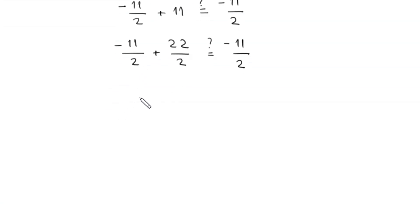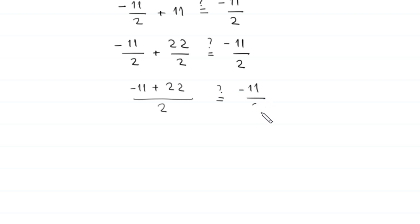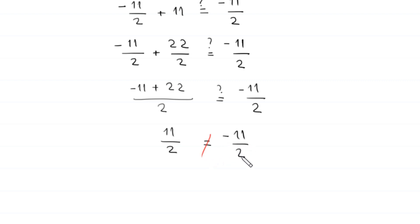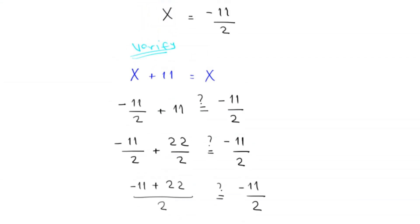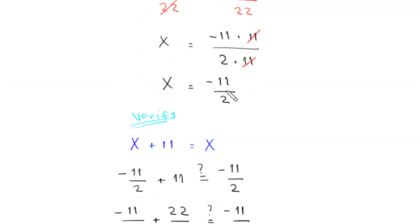Using 2 as a common denominator: negative 11 plus 22 over 2 equals 11 over 2. Is 11 over 2 equal to negative 11 over 2? No, it is not. This means x equals negative 11 over 2 is not a solution.